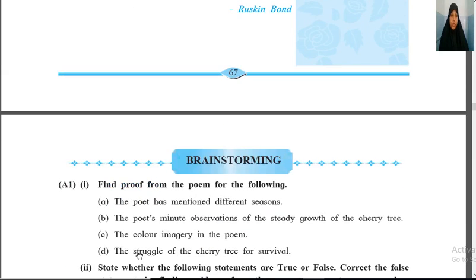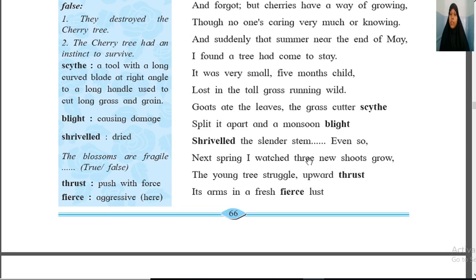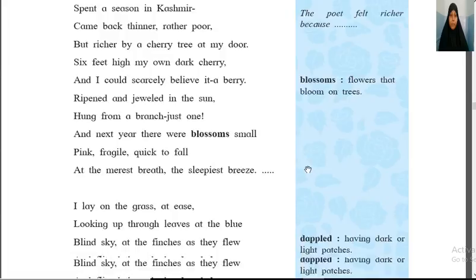All these colors are used and mentioned in the poem. Then the struggle of the cherry tree for survival — how it was struggling to survive. The goats ate the leaves, the grass cutter split it apart, and there was monsoon blight, so it was completely destroyed. But again, next spring, he watched that three new shoots had grown and the young tree upward thrust — it was trying to grow upwards against all the wild grass around it.